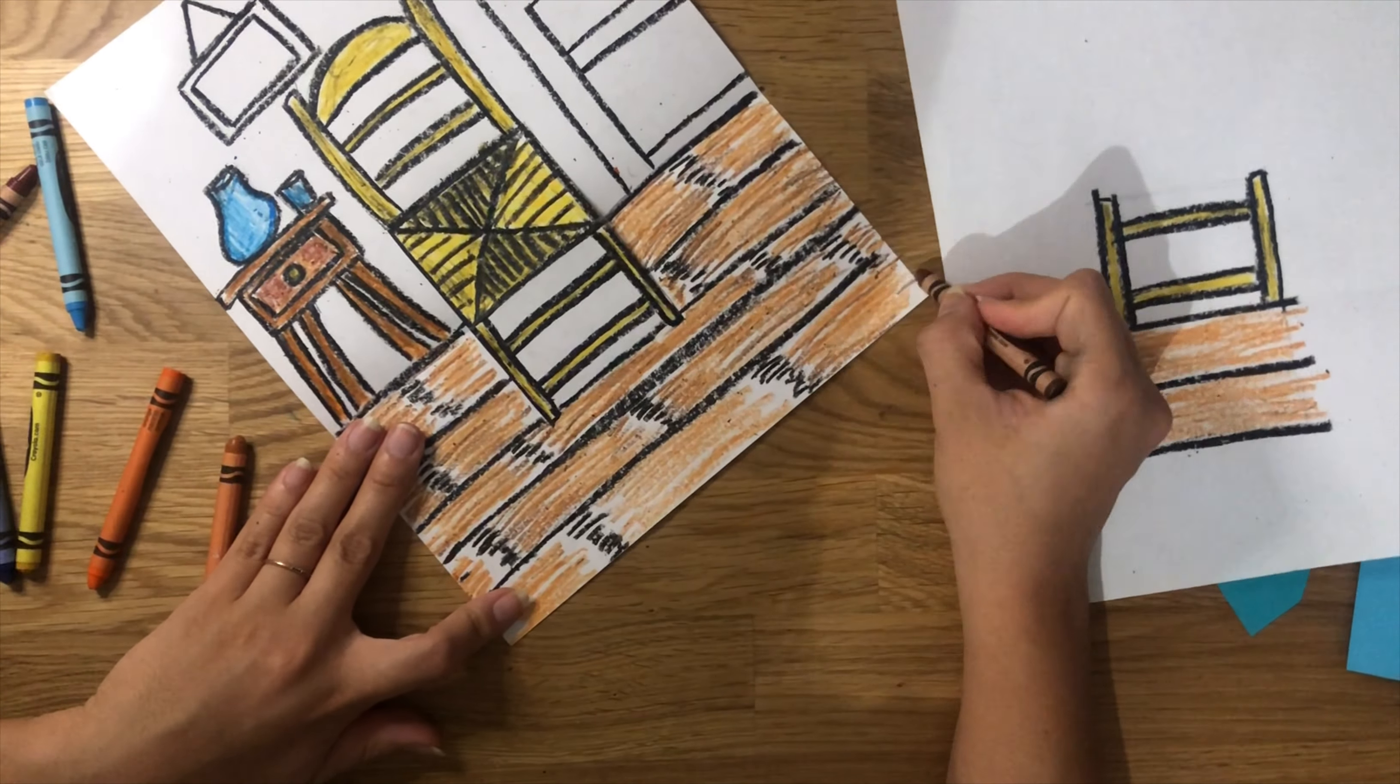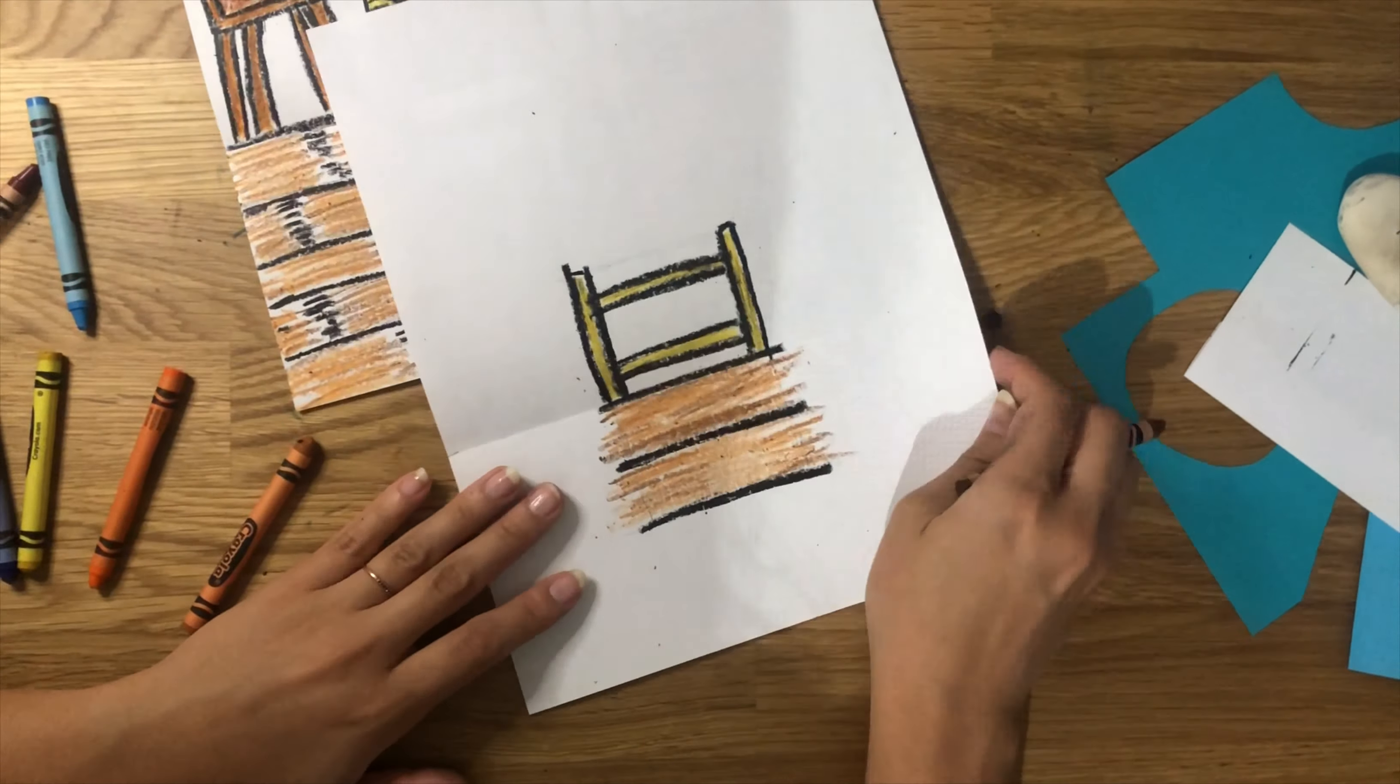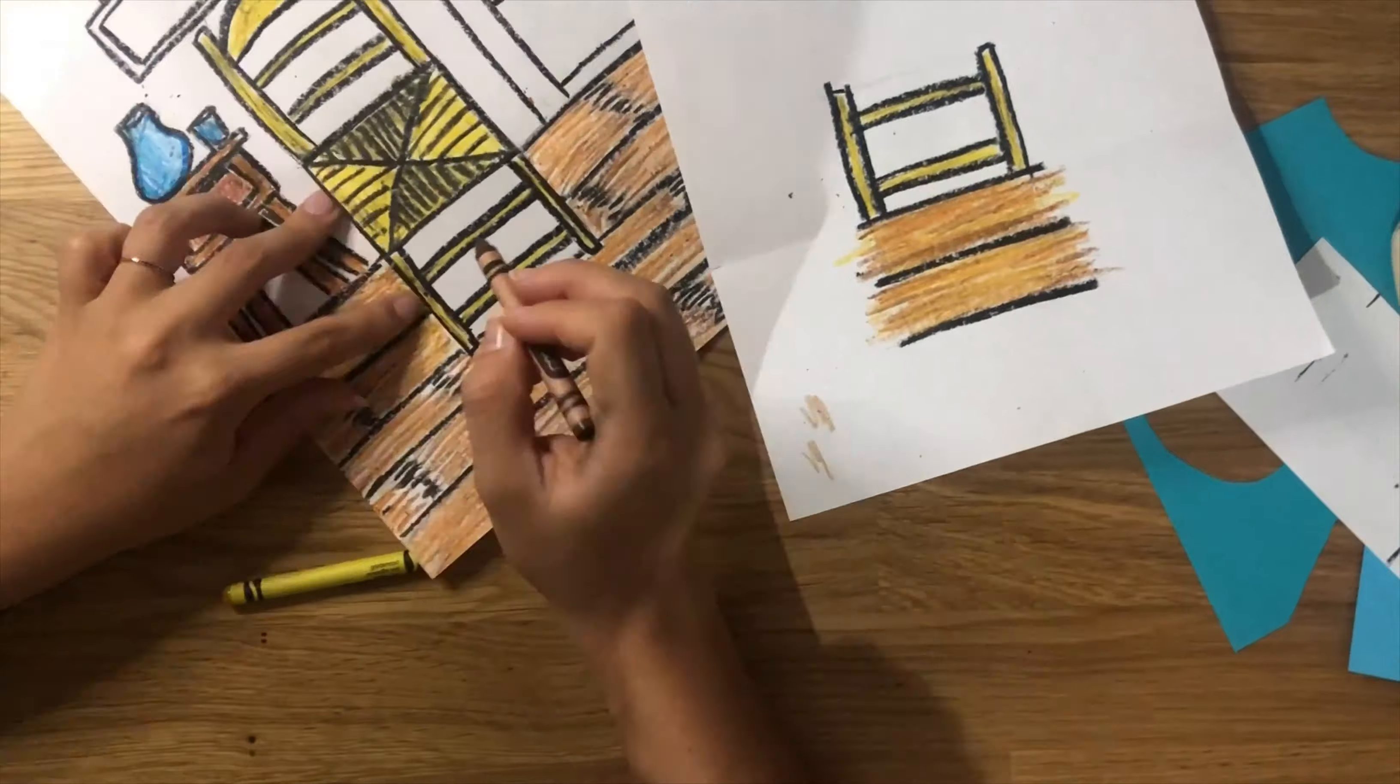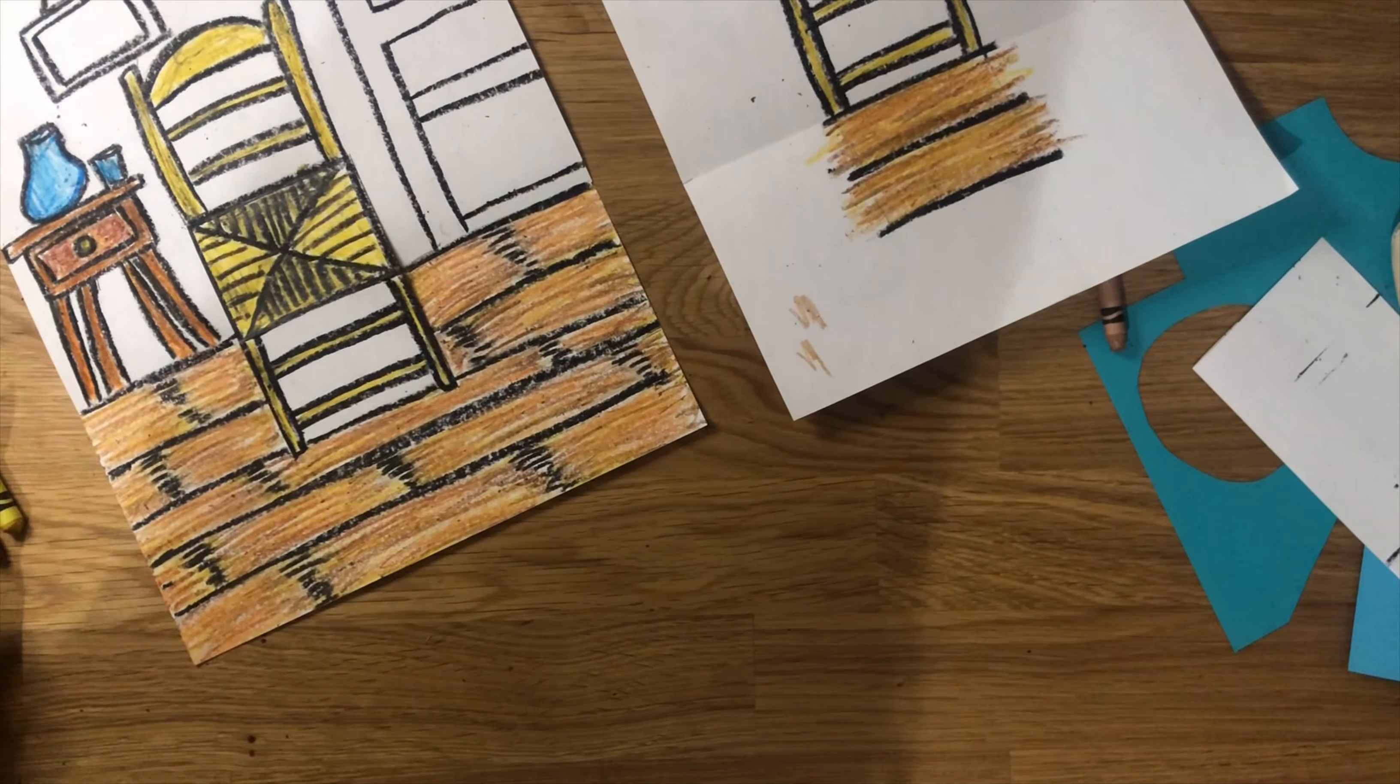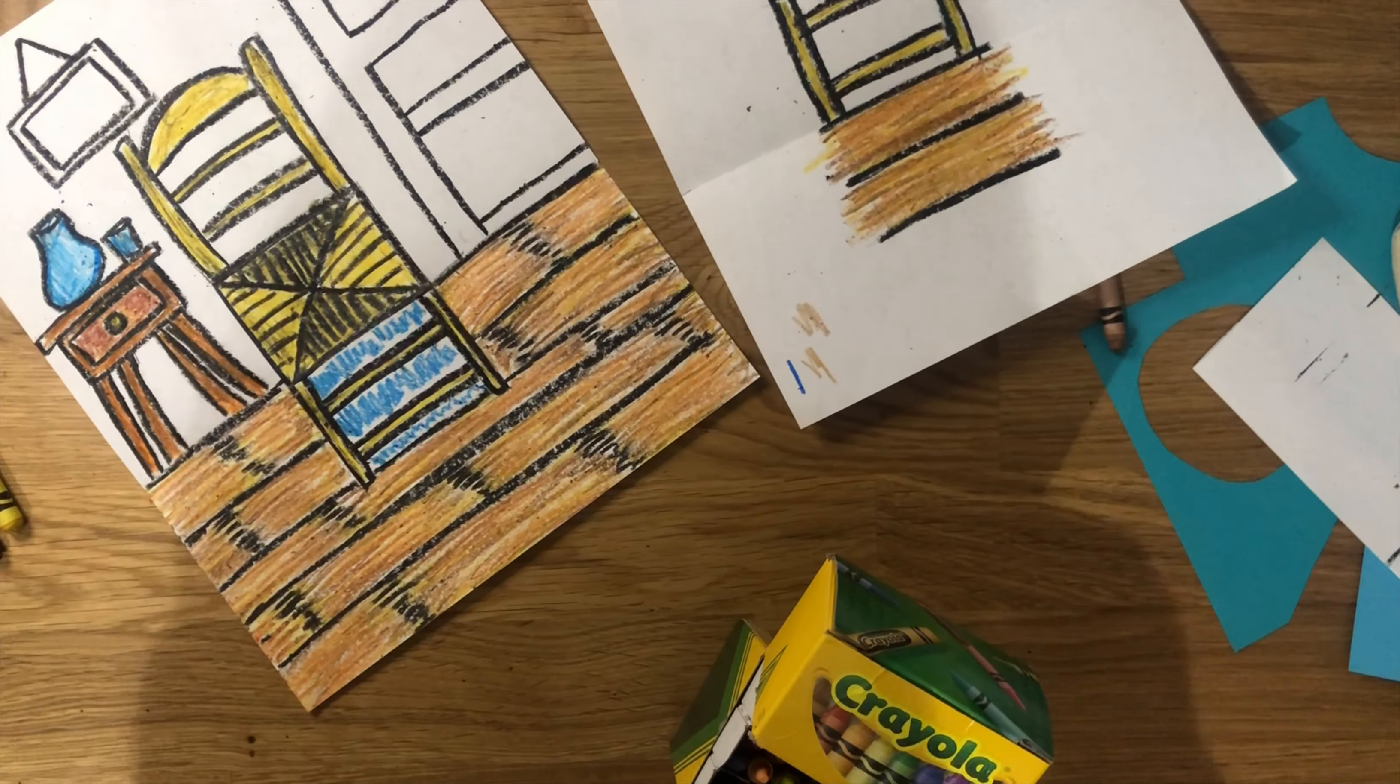Finally, I brought in the yellow and I completely filled in any other empty spots that I had. Make sure to also color the other chunk of floor on your other paper.